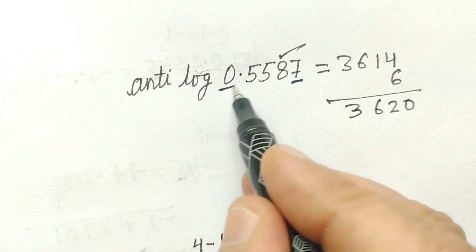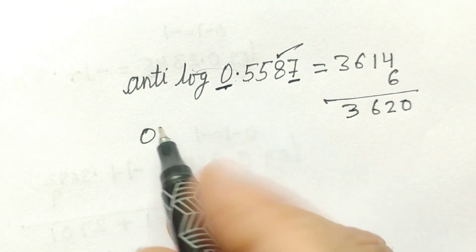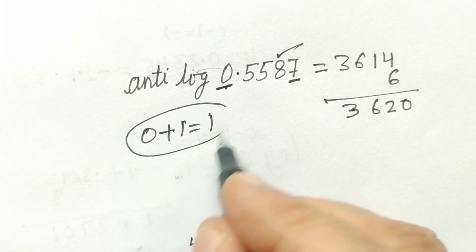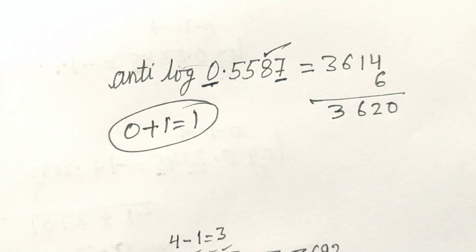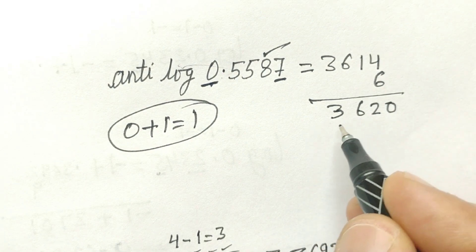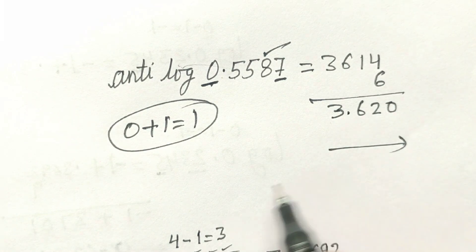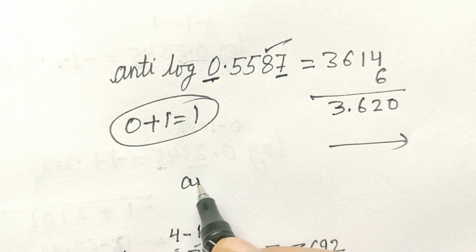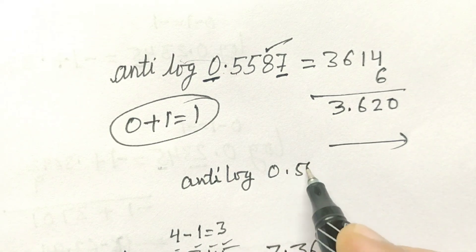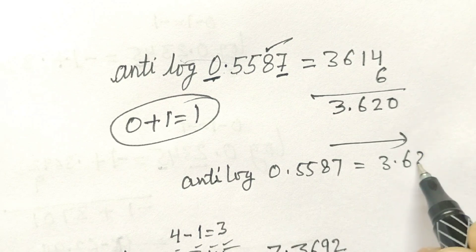Here the characteristic is 0, so we will add 1, which gives 1. Now we will make a point, counting digits from left to right. So antilog of 0.5587 is equal to 3.620.